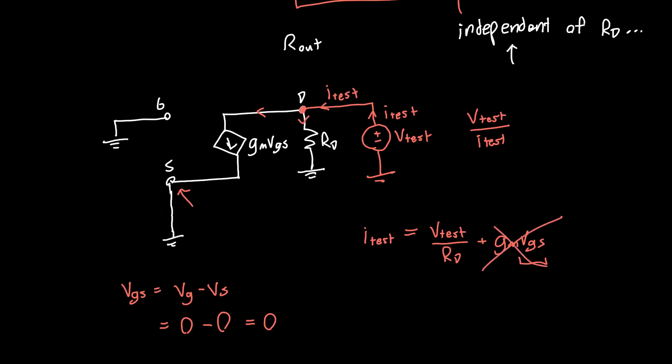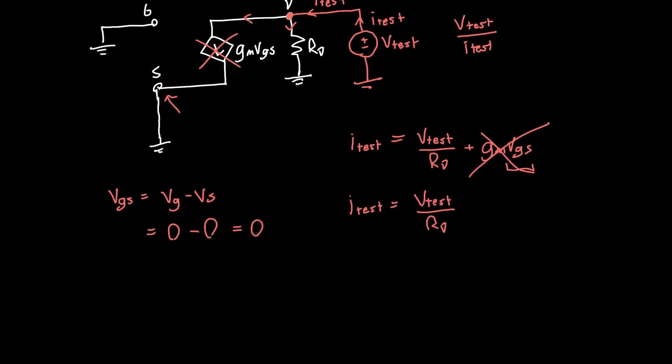So Itest is just equal to Vtest over RD. Or rearranging that, the output resistance, which is Vtest over Itest, is equal to RD. Cool, we're done.